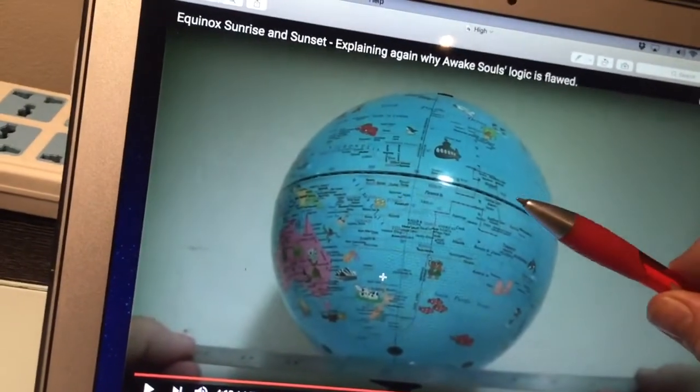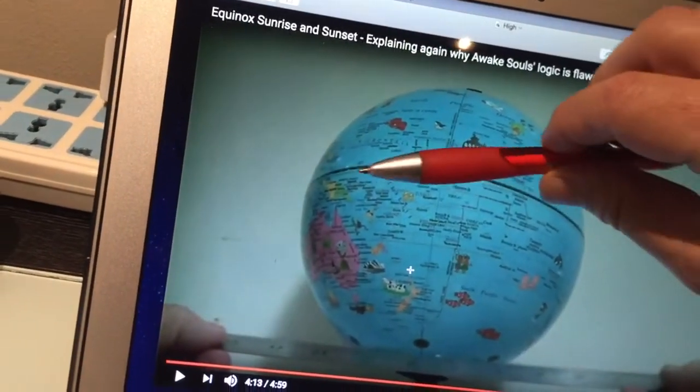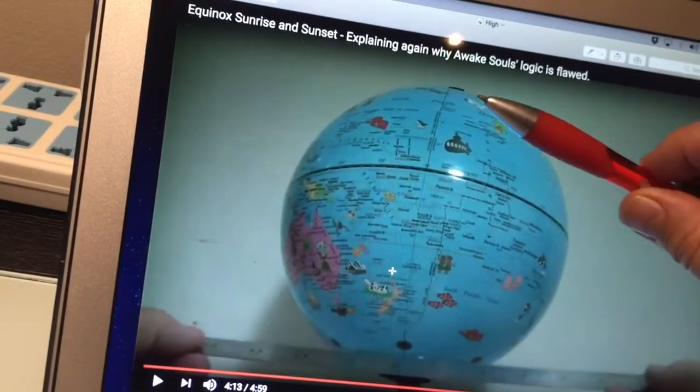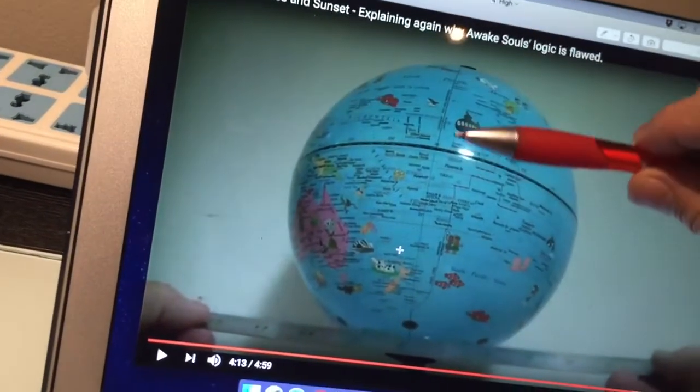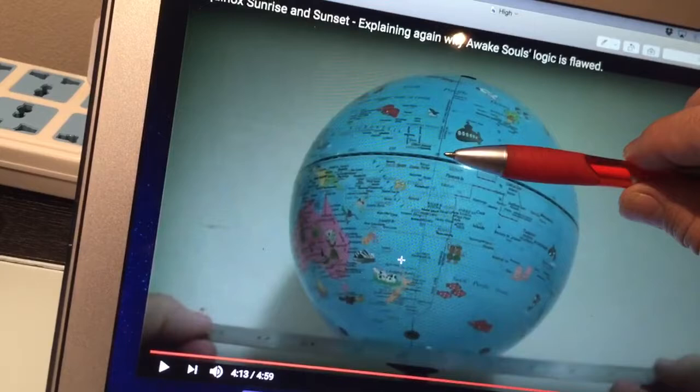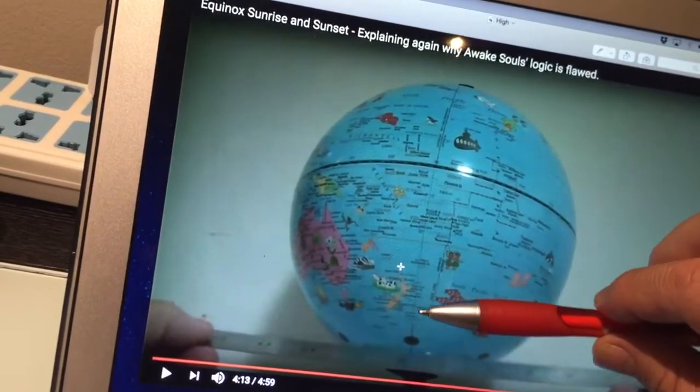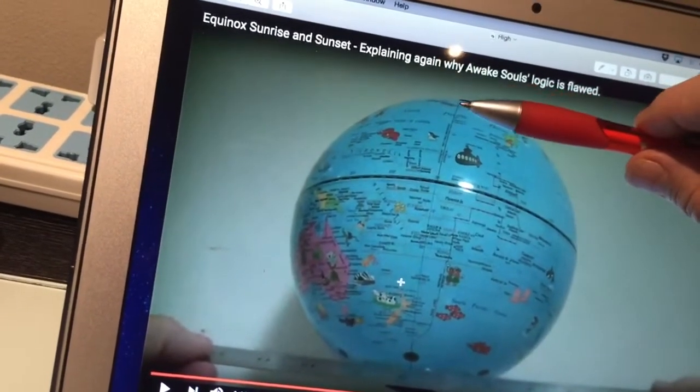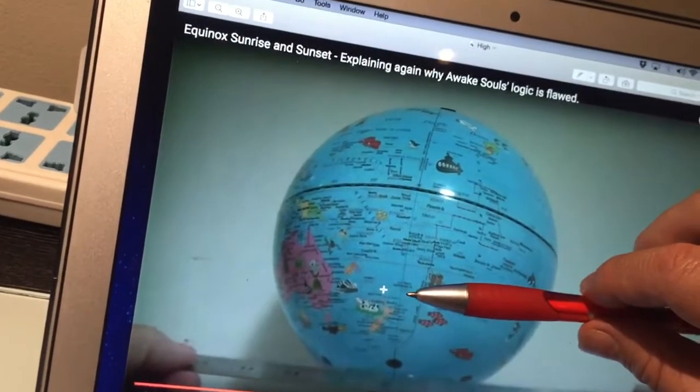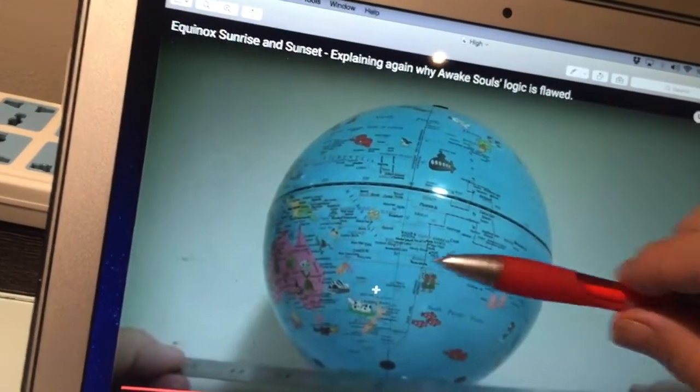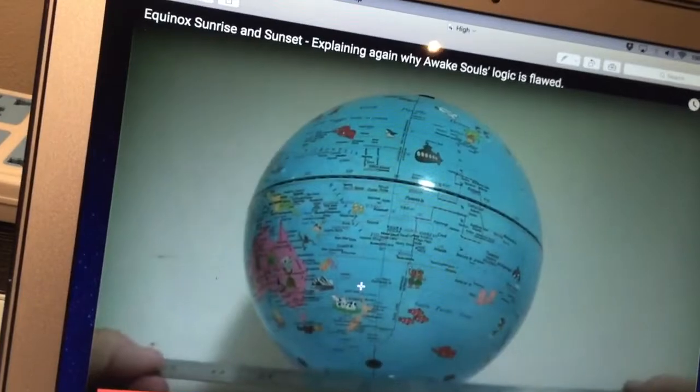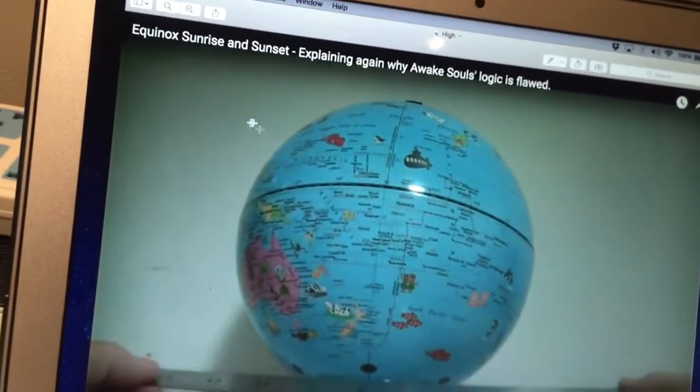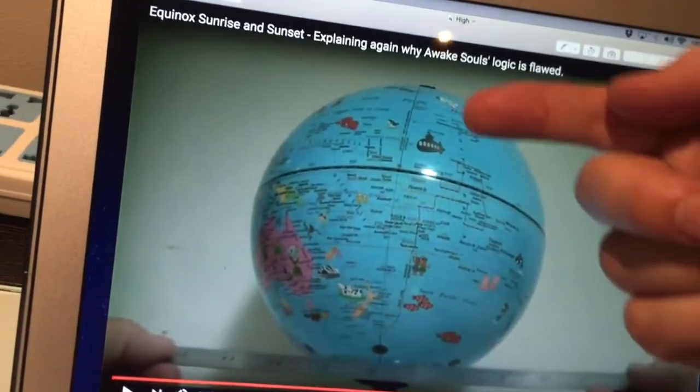You can see the lines of latitude are going up, then they're going down. They're going up, then they're going down. It's just that one instant point where they are level. Now when that point where they are level is on the Terminator, that is when the Sun is going to be rising at 090 and setting at 270 all over the Earth.